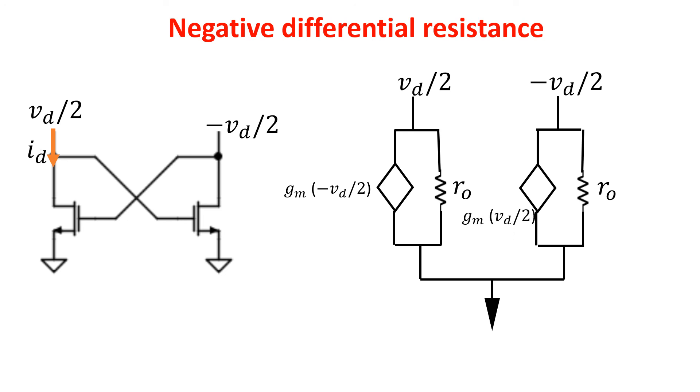So now very easily we can write the current flowing through the circuit. Id is the sum of minus Gm Vd over 2 and Vd over 2 divided by Ro, which are written in this way, where you see that since Gm Ro is the intrinsic gain of the transistor, this is usually made much more than one, thus creating a negative transconductance. So the differential resistance is more or less minus 2 over Gm.